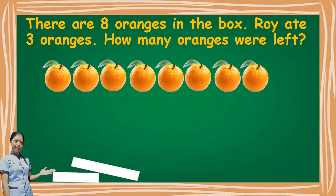So, to know how many oranges were left, we will put an X on the number of oranges that were eaten. So, let us cross out three — one, two, three. Now let us count the number of oranges that are not crossed out: one, two, three, four, five. Very good. There are five. So, eight oranges take away three is five oranges.